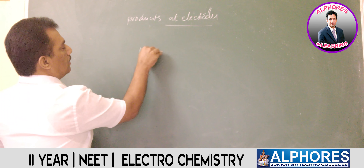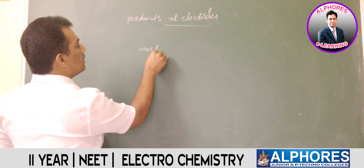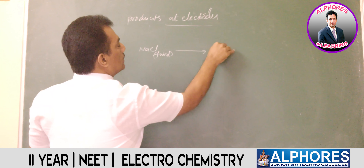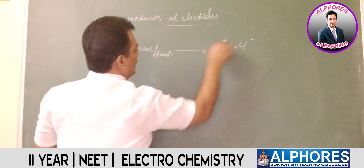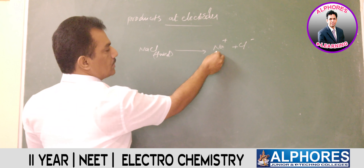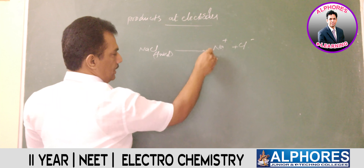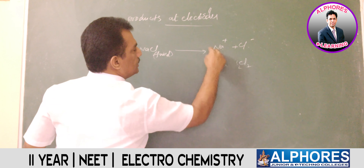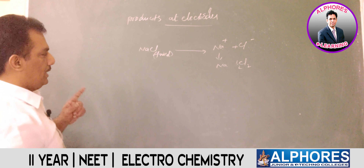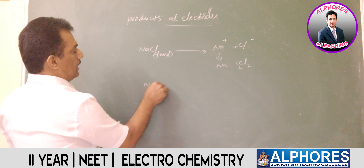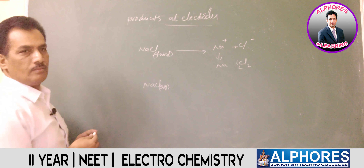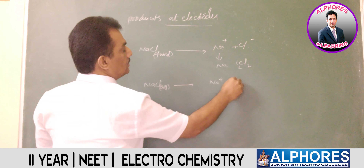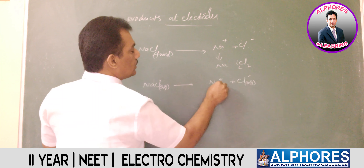In the case of electrolyzing NaCl in fused condition, two ions are formed — a cation and an anion. Since only one ion is present at each electrode, cathode and anode, they get discharged without any competition. But in the case of NaCl aqueous solution, it splits into Na⁺ and Cl⁻ ions at both electrodes.